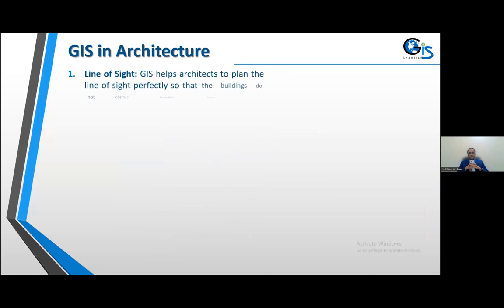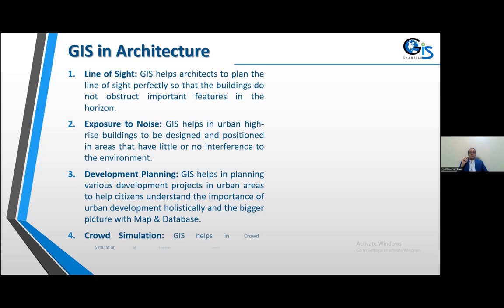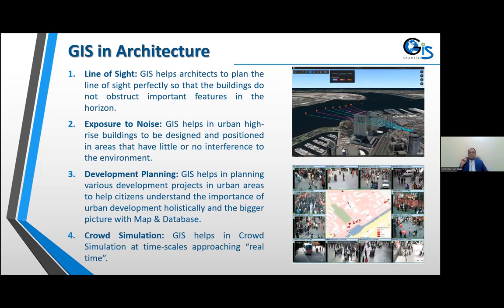Now let's see GIS in architecture. For line of site, GIS helps architects plan the line of site perfectly so that buildings do not obstruct important features on the horizon — see the upper right image. GIS also helps urban high-rise buildings be designed and positioned in areas with little or no environmental interference. For development planning, GIS helps plan various development projects in urban areas to help citizens understand urban development holistically with maps and database. If you present just an image map without a corresponding database, you cannot consider it GIS.